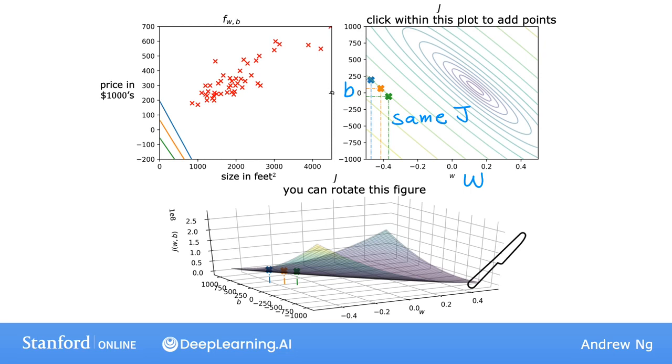Therefore, each horizontal slice ends up being shown as one of these ellipses, or one of these ovals. So concretely, if you take that point,